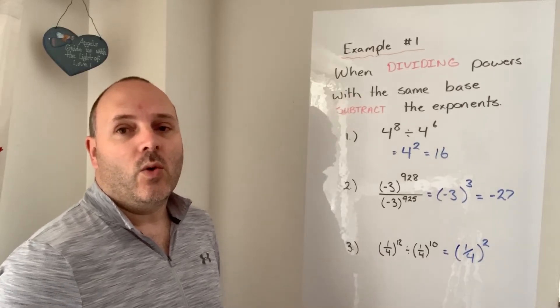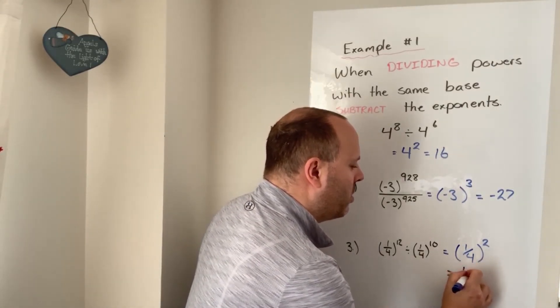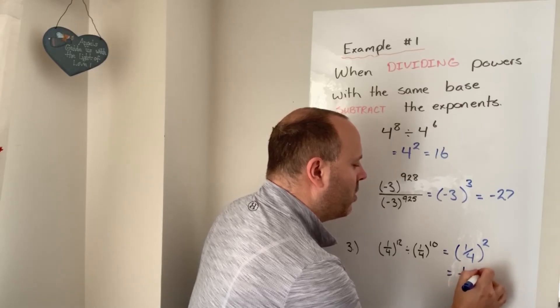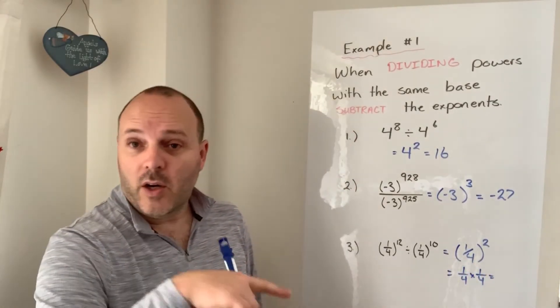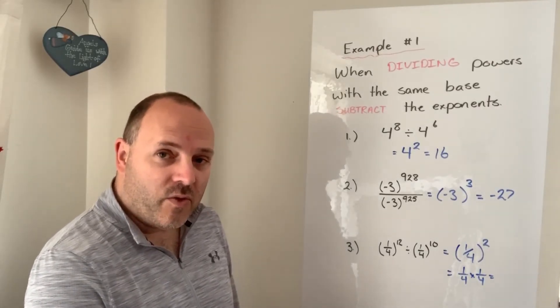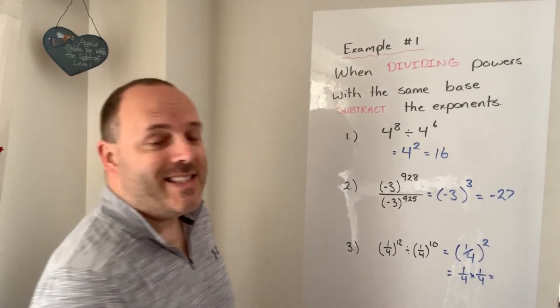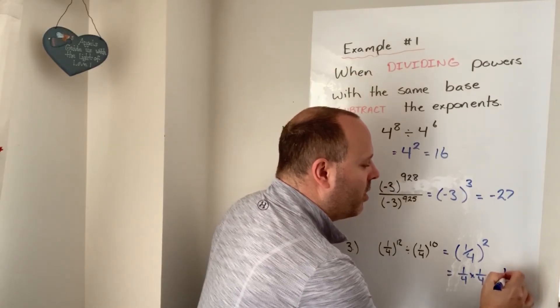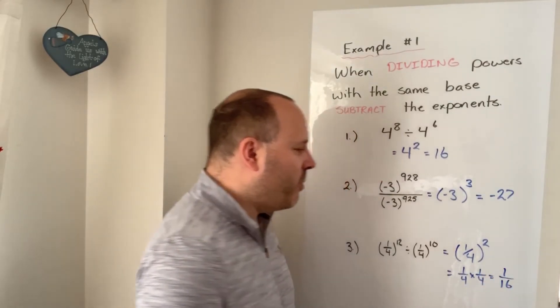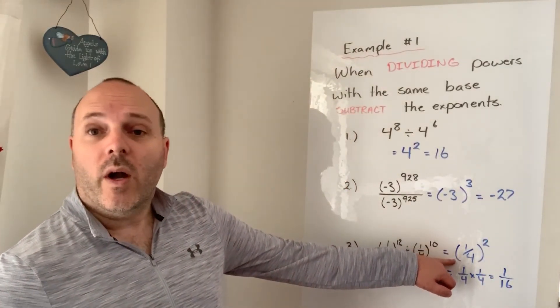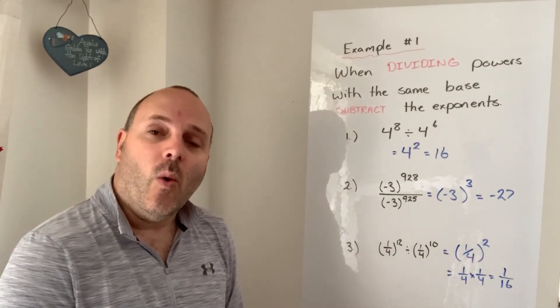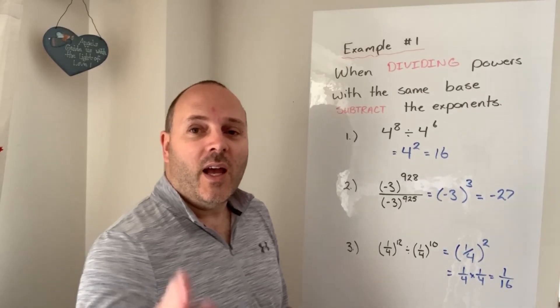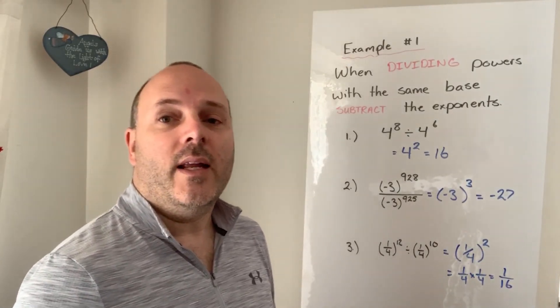Now that means 1 quarter times 1 quarter. And numerator times numerator, that's 1. Denominator, 4 times denominator, 4. That's 16. So I've got 1 over 16. Or you might say that was 1 over 4 squared. 4 squared is 16. So we've got 1 over 16. Okay, again, questions guys, go ahead, email me.